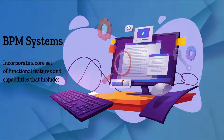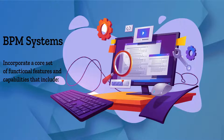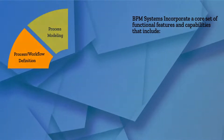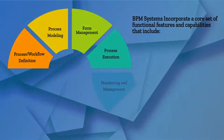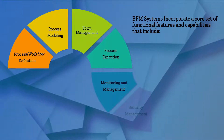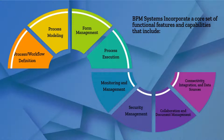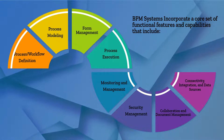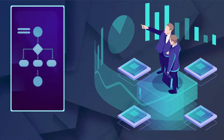To deliver on their promises to help organizations improve business process management, BPM systems incorporate a core set of functional features and capabilities that include process workflow definition, process modeling, form management, process execution, monitoring and management, security management, collaboration and document management, connectivity, integration, and data sources. These features, in turn, enable the company to perform different types of data analysis and visualization processes.